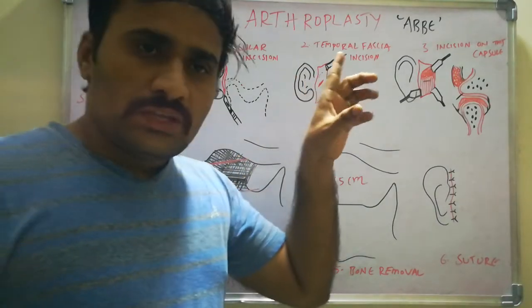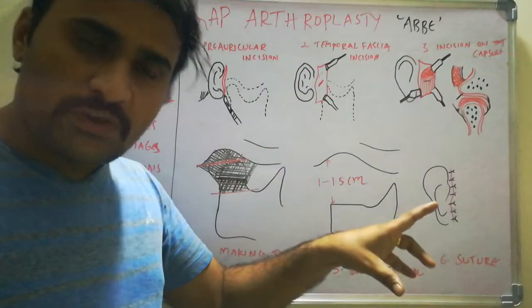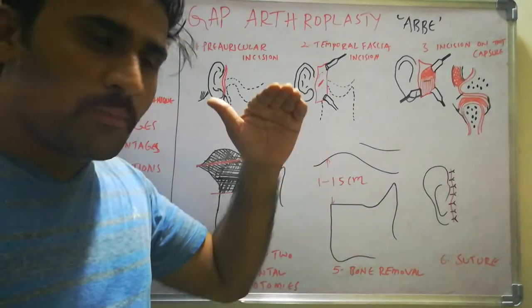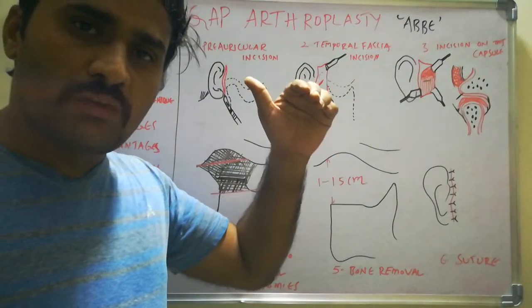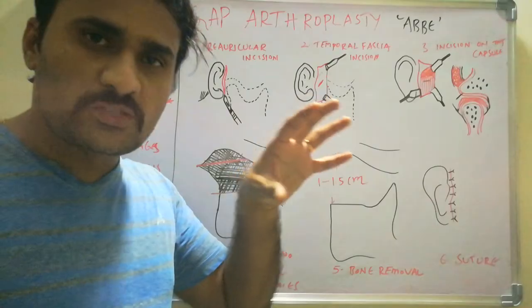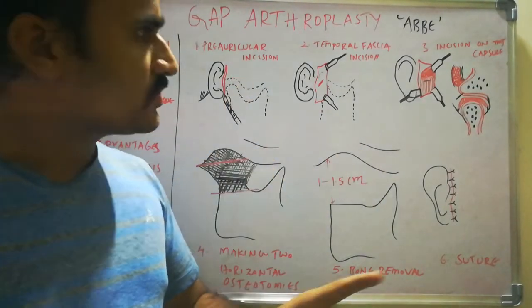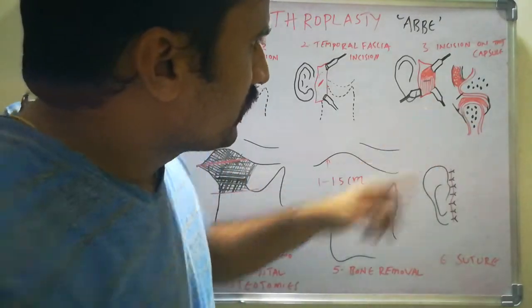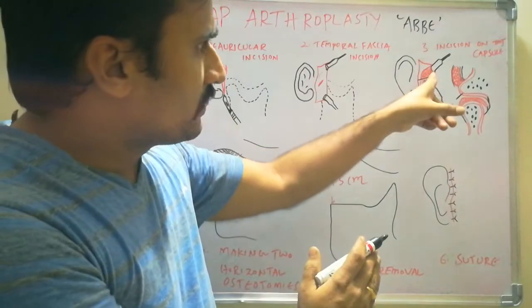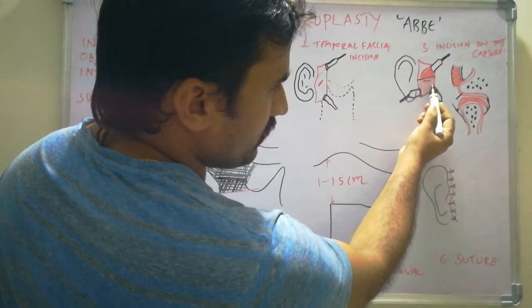After incising the superficial layer, carry out dissection through it. Over the zygomatic arch, you can also incise the periosteum. Above the zygomatic arch, dissection is at the level of the superficial temporalis fascia; at the arch, you directly incise the periosteum to expose it; and below the arch, you dissect until the TMJ capsule is visible. In the diagram, the fat is seen above the zygomatic arch after dissecting the superficial layer, and the white lines below the arch represent the TMJ capsule.